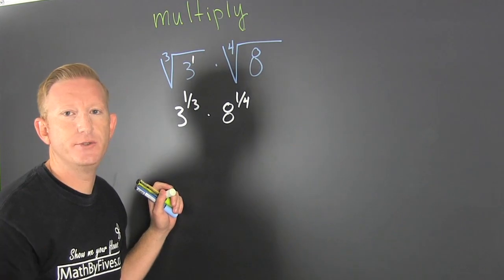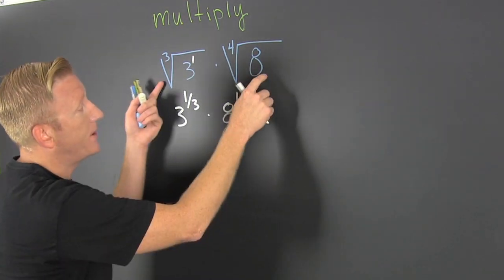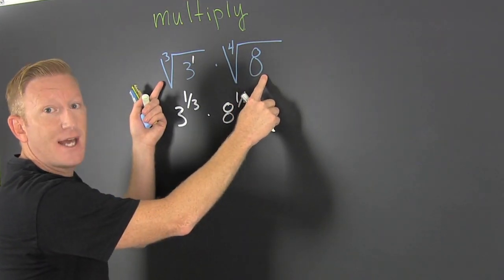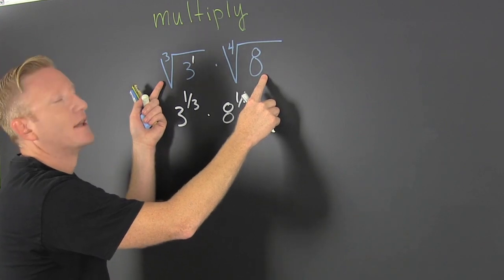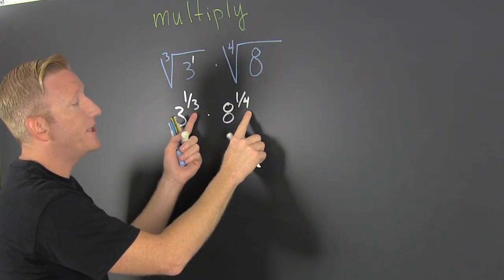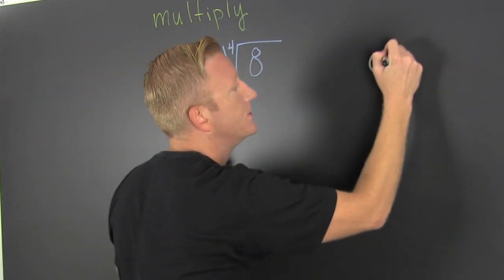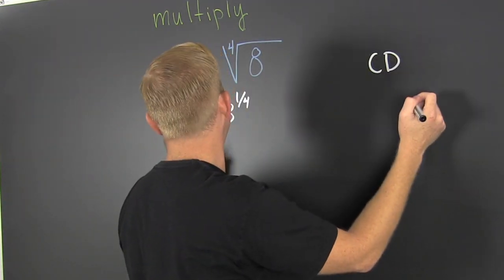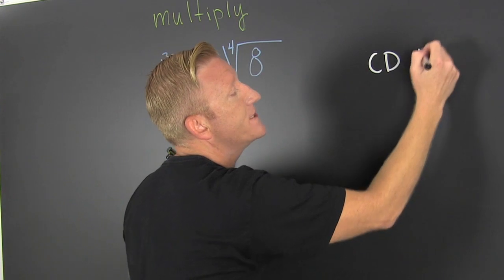Now what I'm really trying to do is rewrite this product. In order to do that, I need like indexes, so I need a common denominator. A common denominator between three and four is twelve.